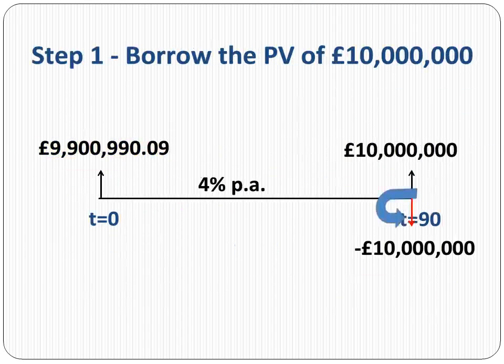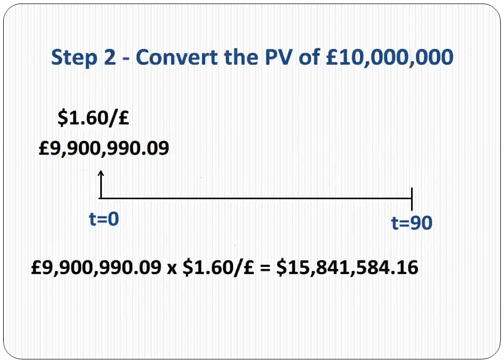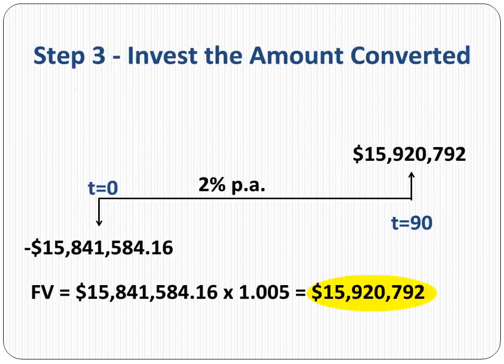The loan creates an obligation of 10 million pounds for the exporter. This obligation will be satisfied using the receivables from the customer in 90 days. In step 2, the exporter converts the borrowed amount to US dollars at the current spot rate, receiving $15,841,584 at the current spot rate.